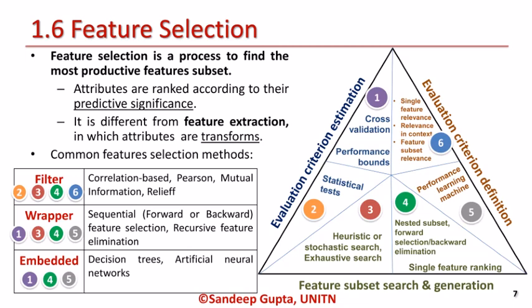Wrapper methods use a subset of features to train a model. They are typically iterative and computationally intensive. This method adds or removes features from a subset by comparing the current results with previous ones. The commonly used wrapper methods are forward feature selection, backward feature elimination, and recursive feature elimination.